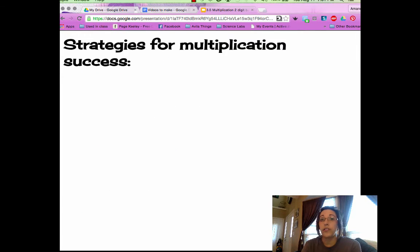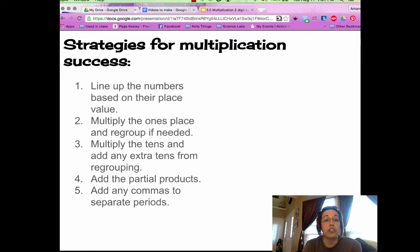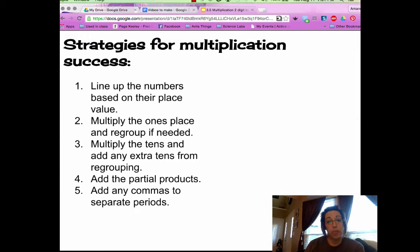Well, really our strategies are going to be very similar to multiplying two-digit numbers. We're going to line up the numbers by place value, multiply the ones and regroup if needed, multiply the tens and regroup if needed, add those partial products together, and then add any commas to separate the periods.